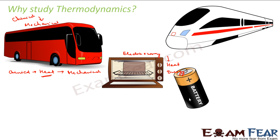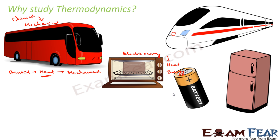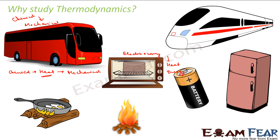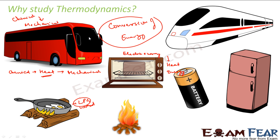In a battery — for example, a lithium ion battery — it has chemicals, so chemical energy gets converted into electric energy. In a refrigerator, electric energy gets converted into heat energy. When you burn something like wood, which is a chemical compound, it gets converted into heat and light energy. Same thing when you cook in the kitchen — the chemical energy of LPG gas or wood gets converted into heat energy. So in all these cases, what we see is conversion of energy, and thermodynamics deals with this.